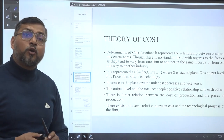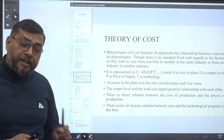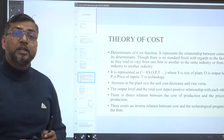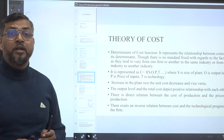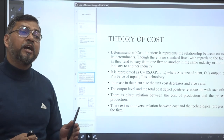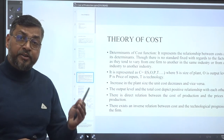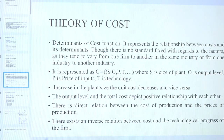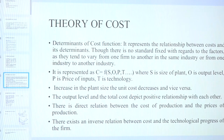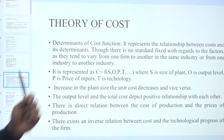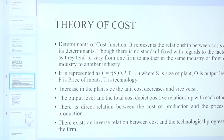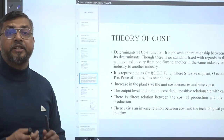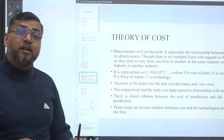Now let's discuss determinants of a cost function. The cost function is not a standard function because it tends to vary from firm to firm within the same industry and across industries. For the sake of understanding, we represent a simple cost function where C is a function of S, O, P, T, and other factors — where S stands for size of the plant, O stands for level of output, P stands for price of inputs used in production, and T stands for technology.